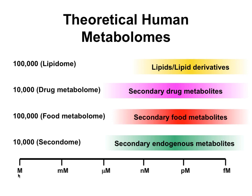These are the metabolites we can detect and describe. But there are many components we're pretty certain are there but can't detect or characterize yet. For example, exotic fatty acids from other plants and animals mean the lipidome is probably 100,000 to 150,000 compounds. We know about 2,600 drug metabolites, but since each drug produces 5 to 10 metabolites, and there are 1,400 drugs, there are probably 10,000 to 15,000 drug metabolites.